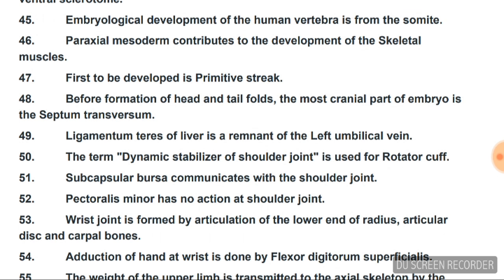The most cranial part of the embryo before formation of head and tail folds is the septum transversum. Ligamentum teres of the liver is a remnant of the left umbilical vein — a frequently repeated exam point. The term 'dynamic stabilizer of shoulder joint' is used for the rotator cuff.